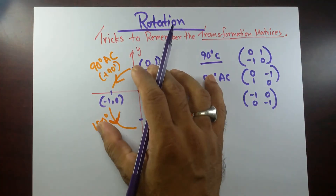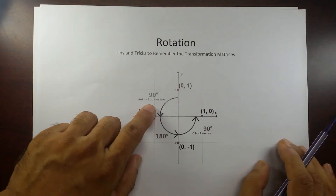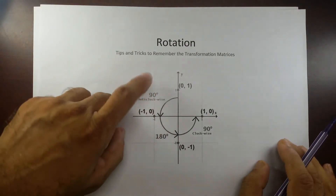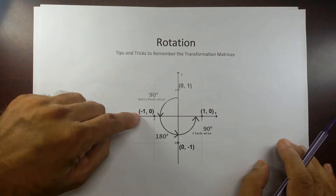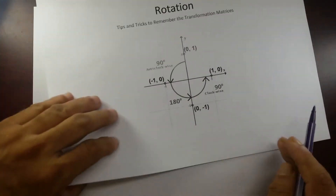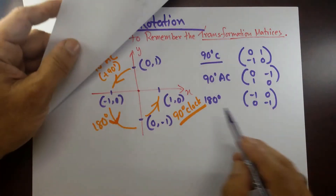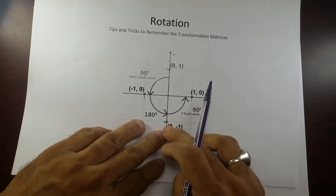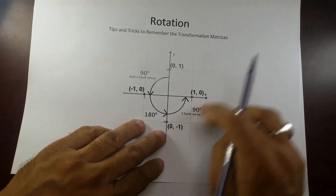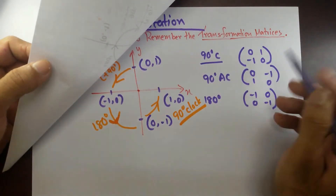Let me summarize. 90 degree anti-clockwise, or positive 90 degree: matrix is 0, 1, minus 1, 0. Then 180 degree: matrix is minus 1, 0, 0, minus 1. And 90 degree clockwise, or minus 90 degree: matrix is 0, minus 1, 1, 0.